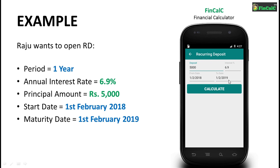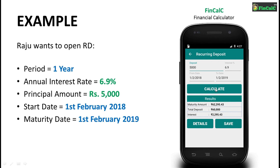So after entering the required details, we click on the calculate button and we get the total maturity amount along with the principal amounts that we have paid and the interest that we have earned.